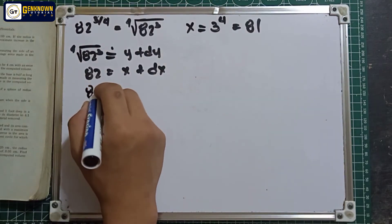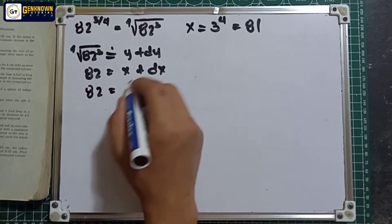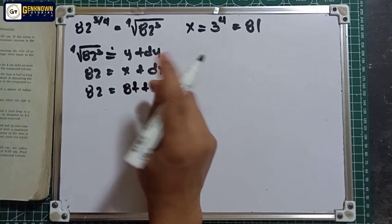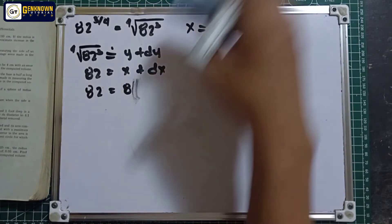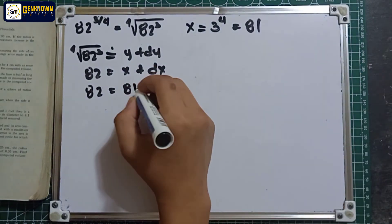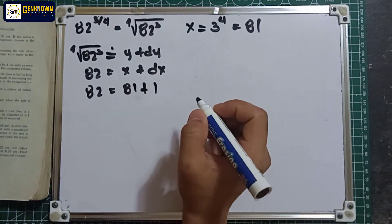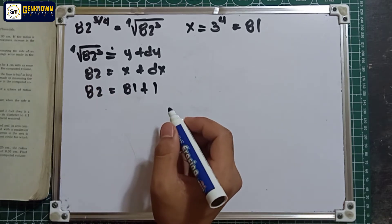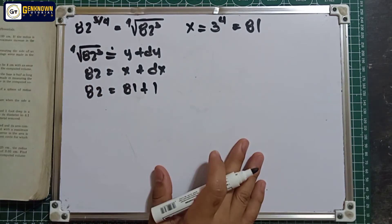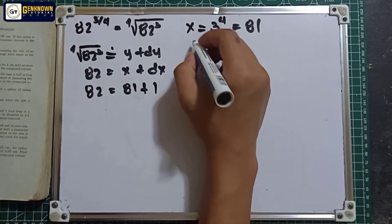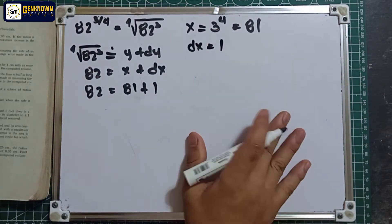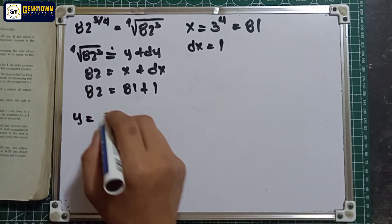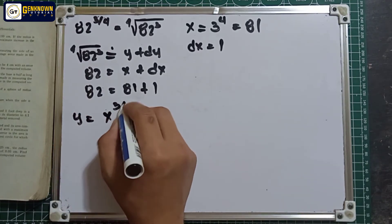So 82 equals 81 plus dx. To make the equation true: 81 plus 1 equals 82, so dx equals 1. Let y equal x raised to 3/4.